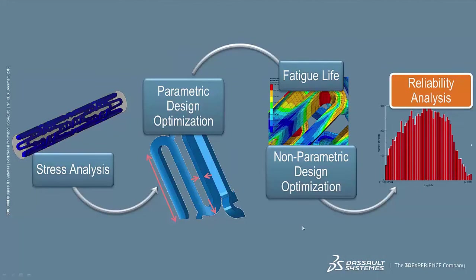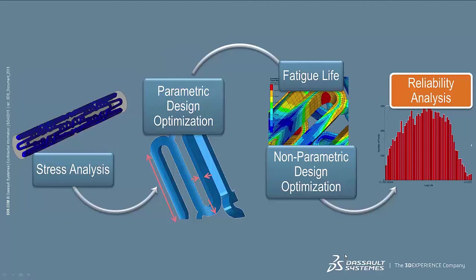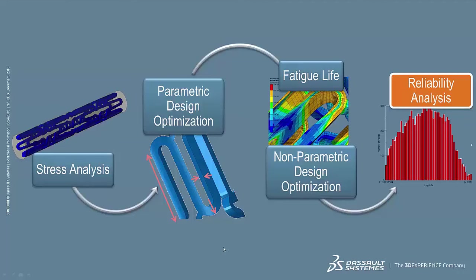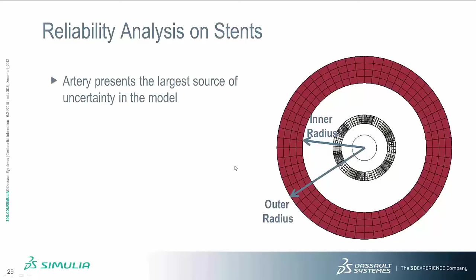Now that we have covered parametric and non-parametric design optimization, we also want to test the reliability of the stent. The same stent will be deployed in a range of patients for which the size of the arteries might be very different. For the reliability analysis, the artery presents the largest source of uncertainty in the model. On the right-hand side in red is the artery modeled as a cylinder; the gray area is the stent; and the inner circle is the balloon which will be expanded to deploy the stent. Two parameters are focused on: the inner radius and the outer radius of the artery, by which we change the shape as well as the thickness of the artery.